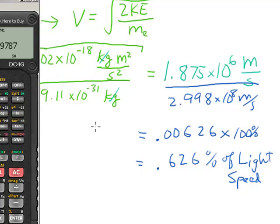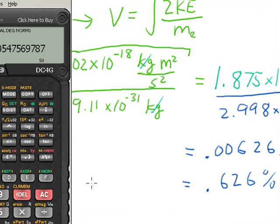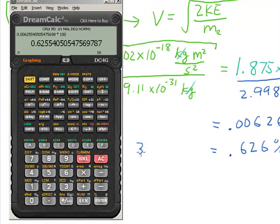Now it turns out that in an electron microscope, you can quickly get up to a large fraction of light speed if you're accelerating by potentials of 30 to 100 kilovolts of potential.